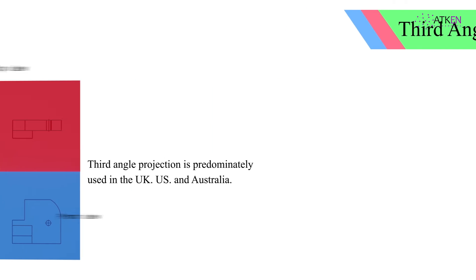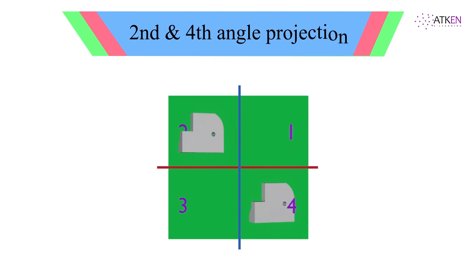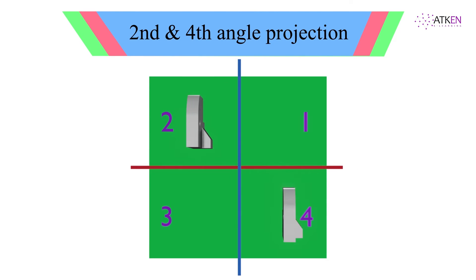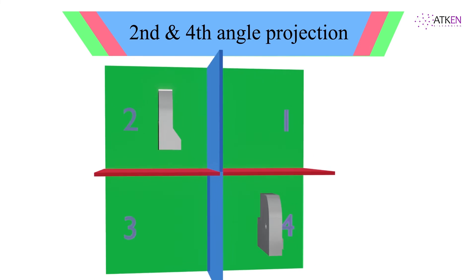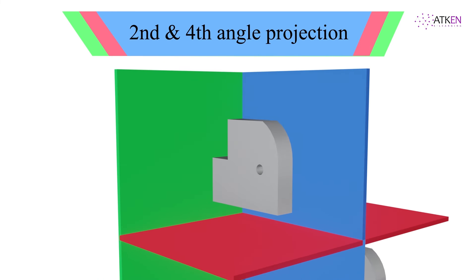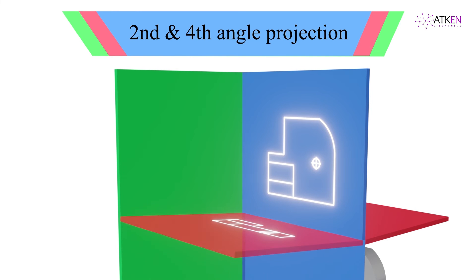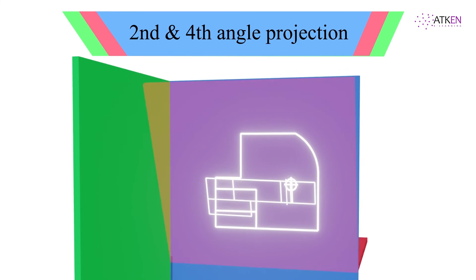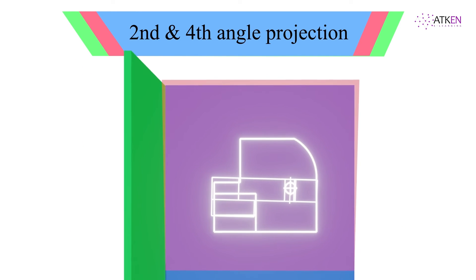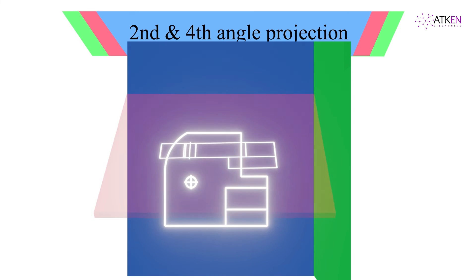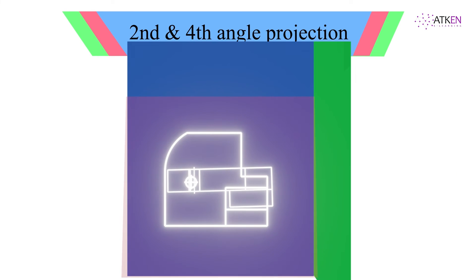In second and fourth angle projection, the object is placed in the second and fourth quadrant respectively, and the corresponding views are taken on the projection planes. Following the convention, top views in both cases are to be brought to the vertical plane by suitable rotation of the horizontal plane. However, by doing so, two views overlap each other, resulting in confusion; therefore, these methods of projection are not recommended in practice.